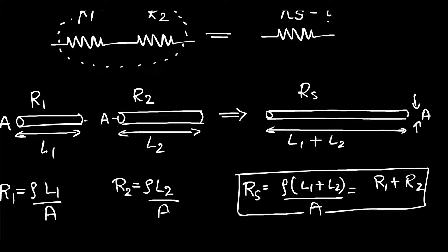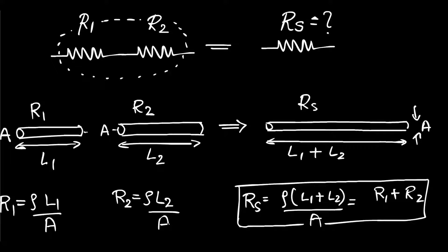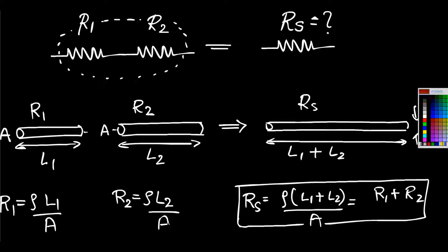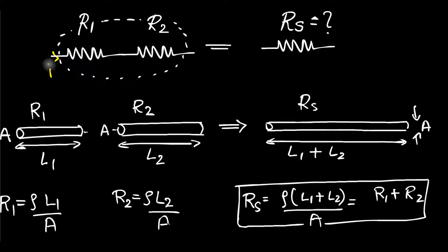What's the definition of series resistance? We say resistors are in series if the current through them is the same. So if the current through R1 is I, the current through R2 must also be I — then we say they are in series.